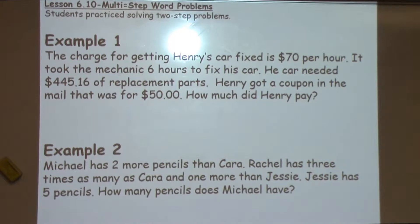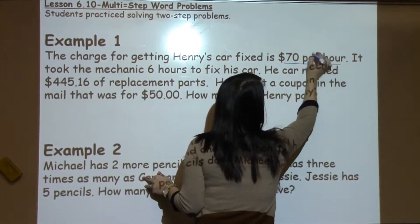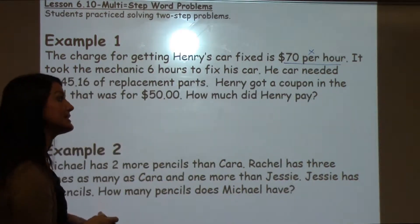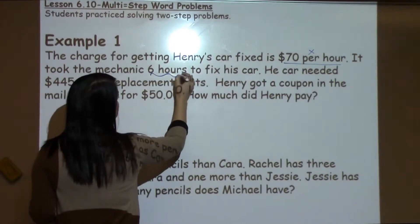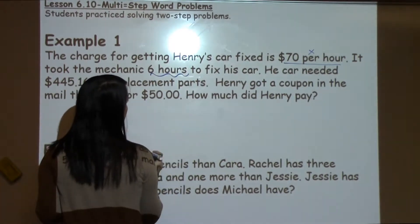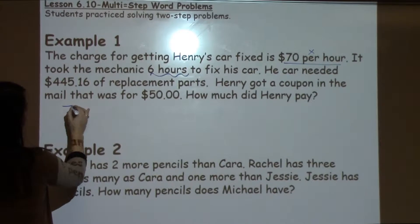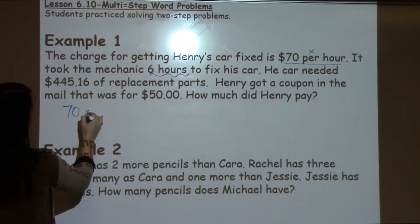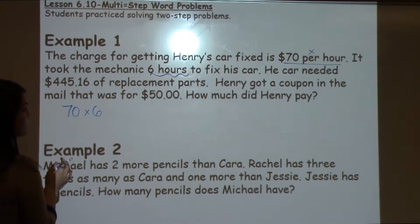Let's look at example one. It says the charge for getting Henry's car fixed is $70 per hour — and remember that 'per' means times, because it's just like 'each.' It took the mechanic 6 hours to fix his car. So the first thing to note is that we have $70 per hour, and it took 6 hours just to fix his car.